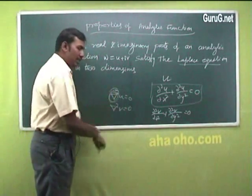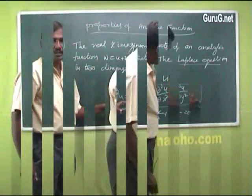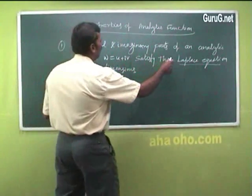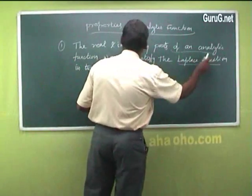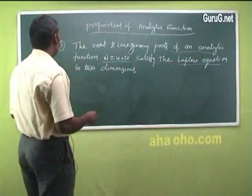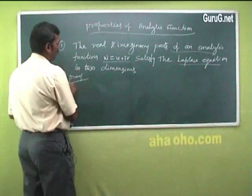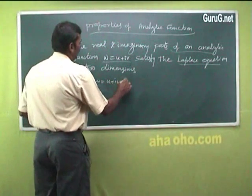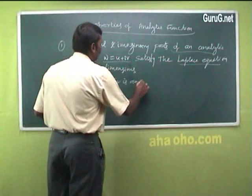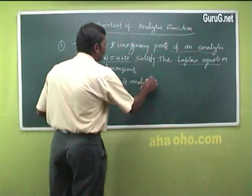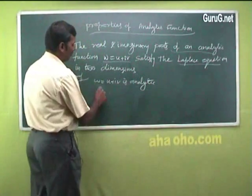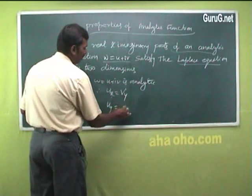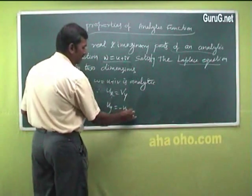We call it as ∇²u = 0 and ∇²v = 0, where ∇² is the Laplacian operator. Since f(z) is an analytic function, w = u + iv is analytic, and the Cauchy-Riemann equations hold: u_x = v_y and u_y = −v_x.